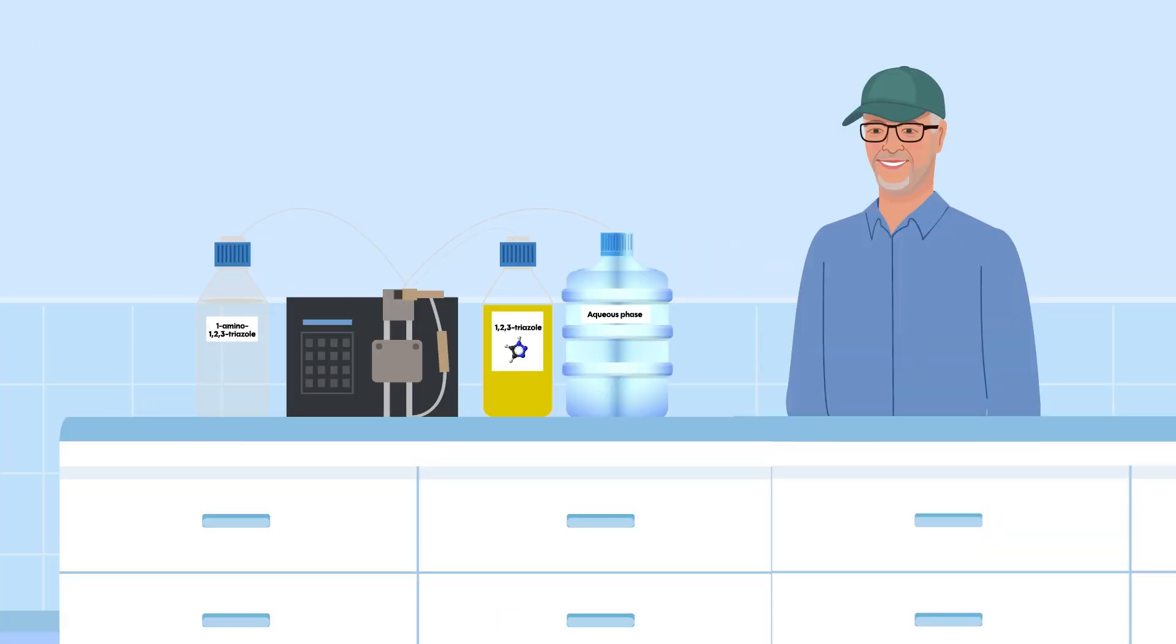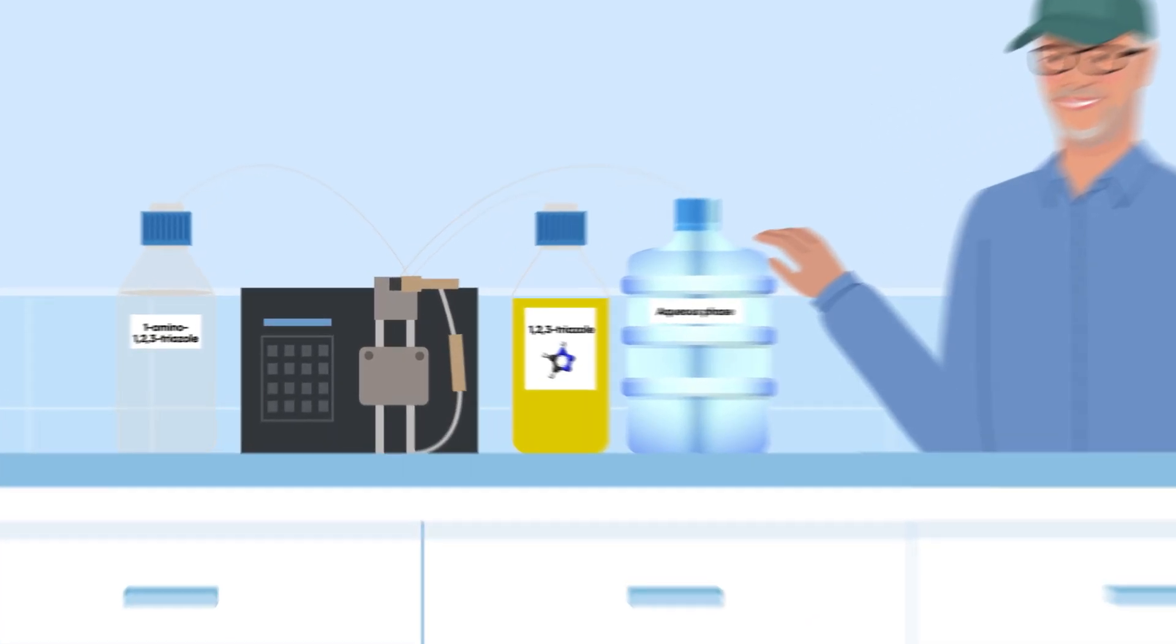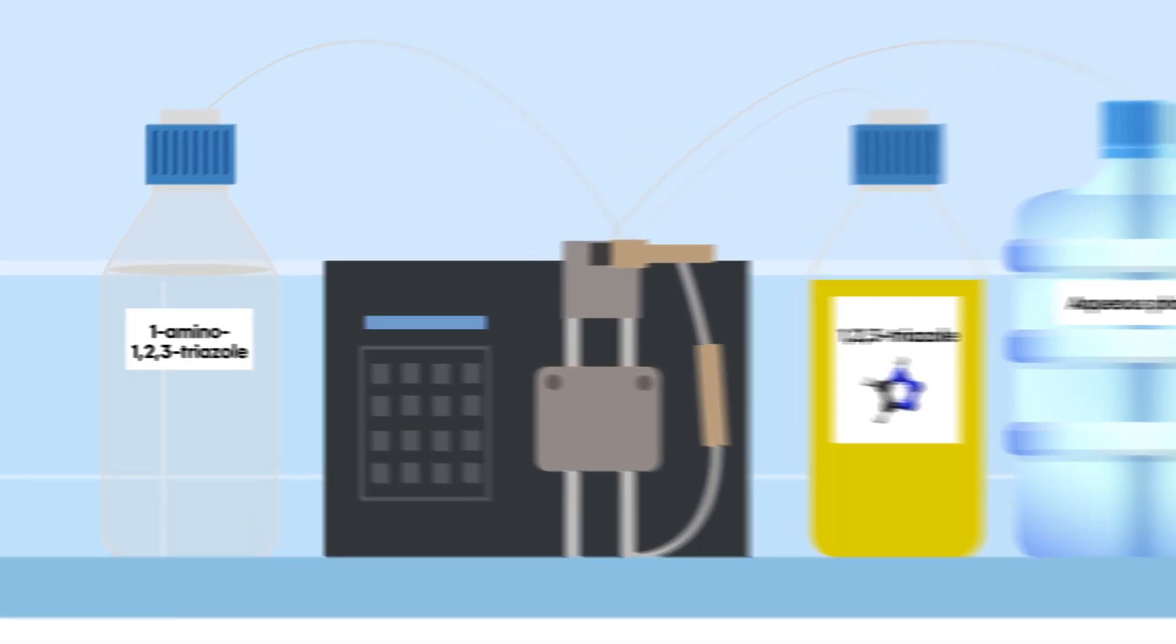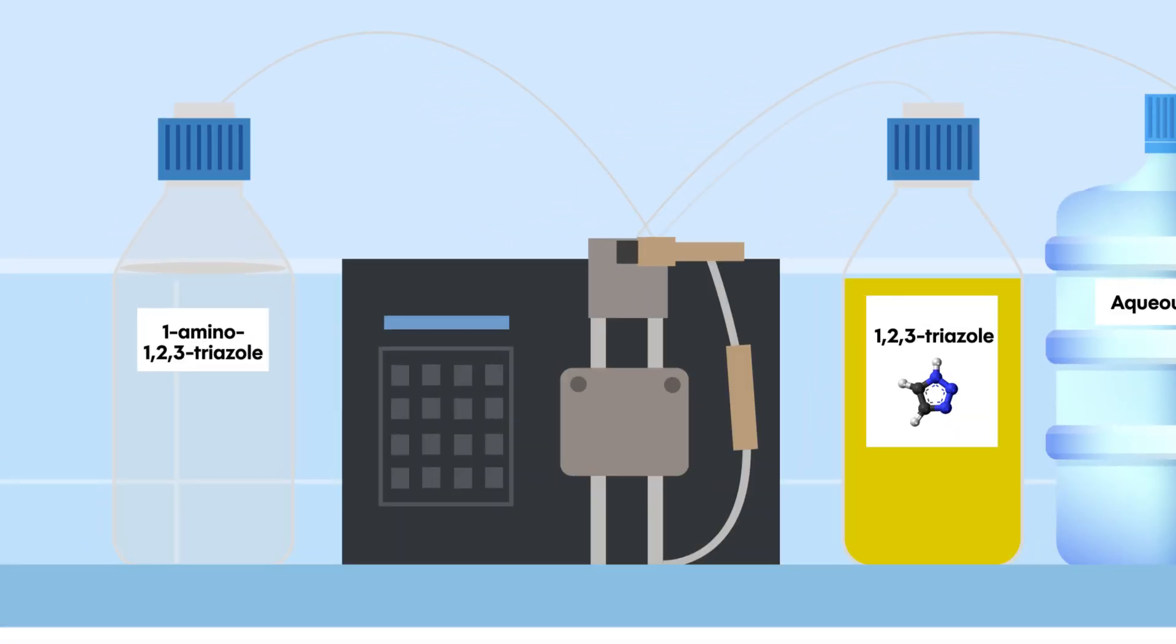Finally, 1-amino-123-triazole was converted into 1-2-3-triazole. Here, the team overcame the challenge of solid by-products blocking reactor tubing by fine-tuning the reaction sequence and concentrations. They also added an in-line purification system, ensuring high purity.